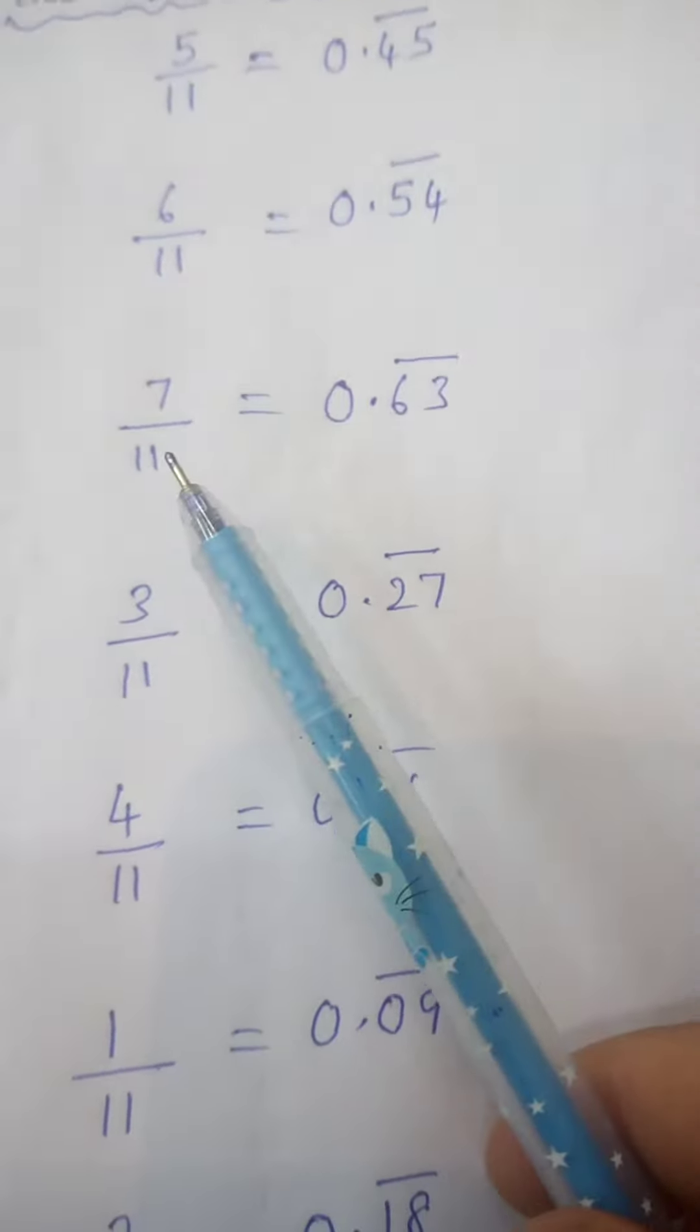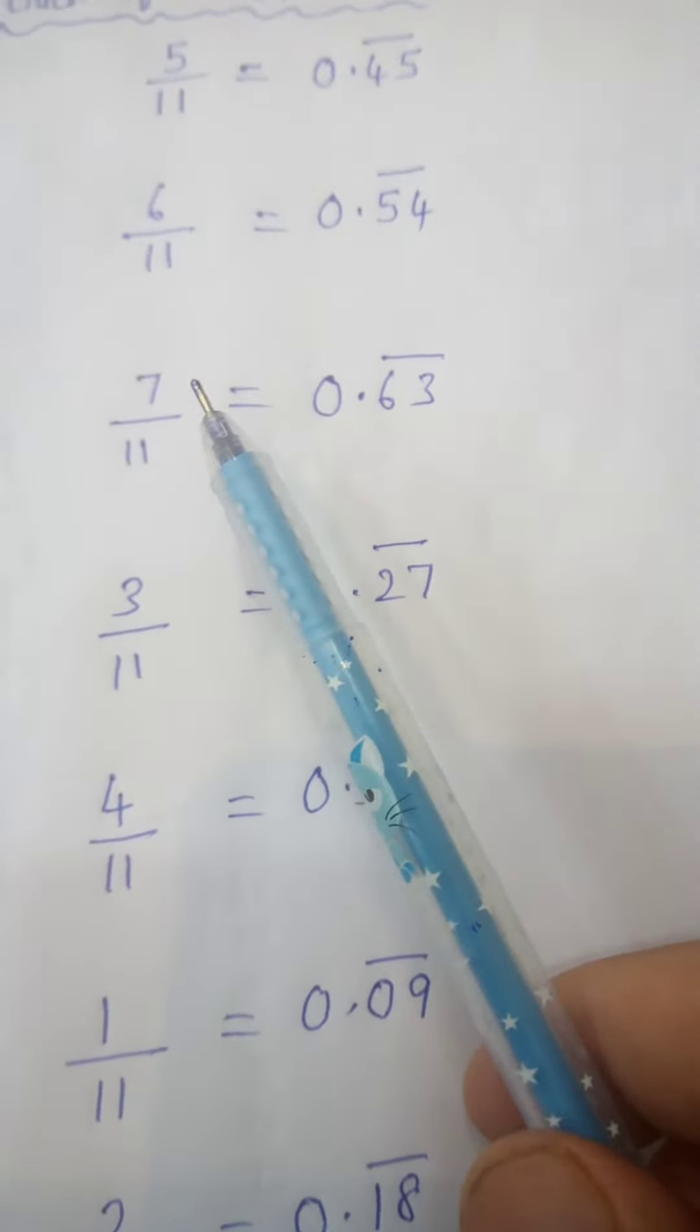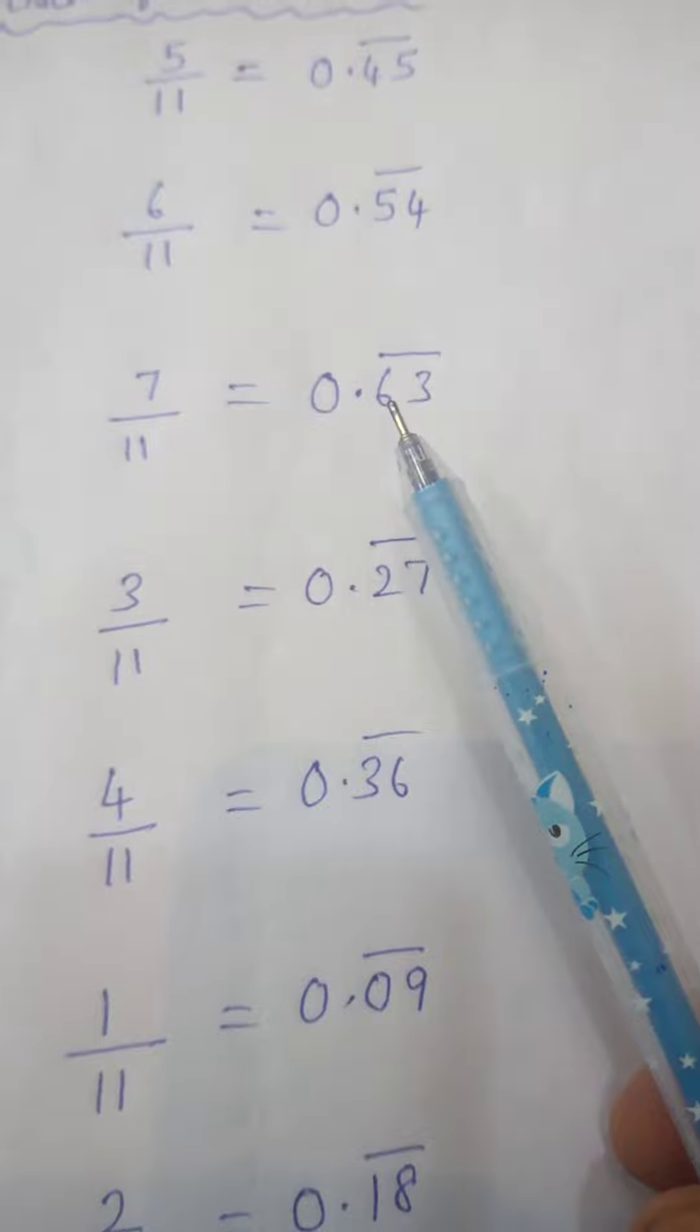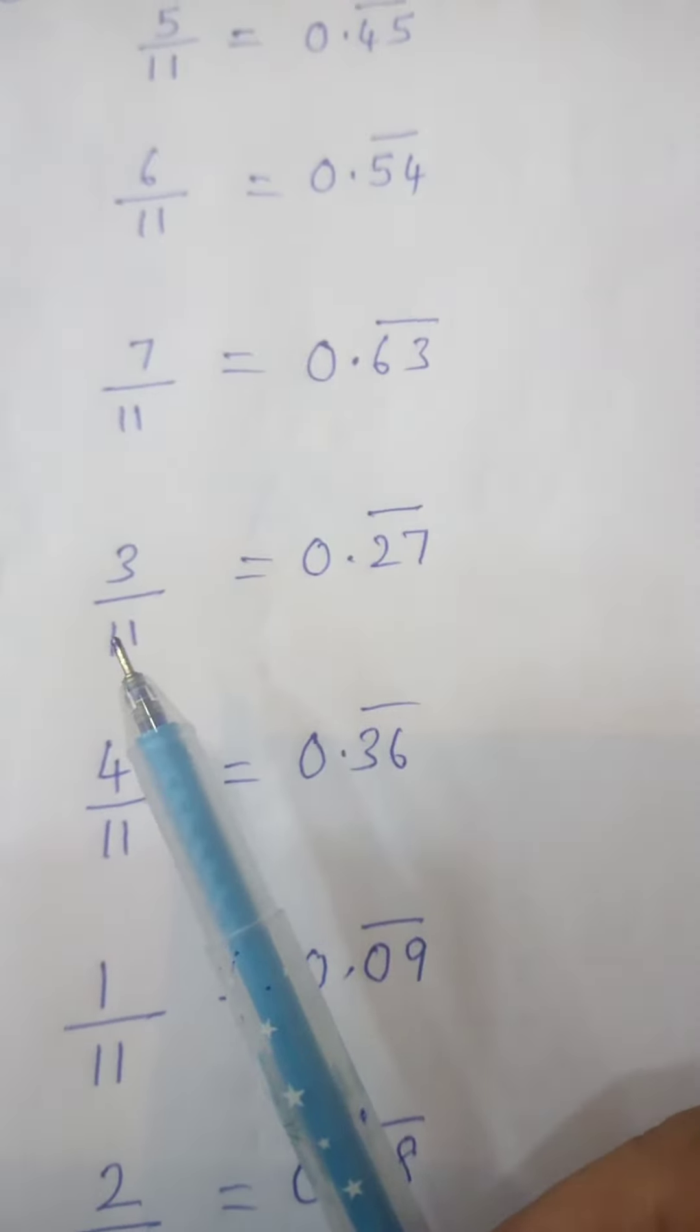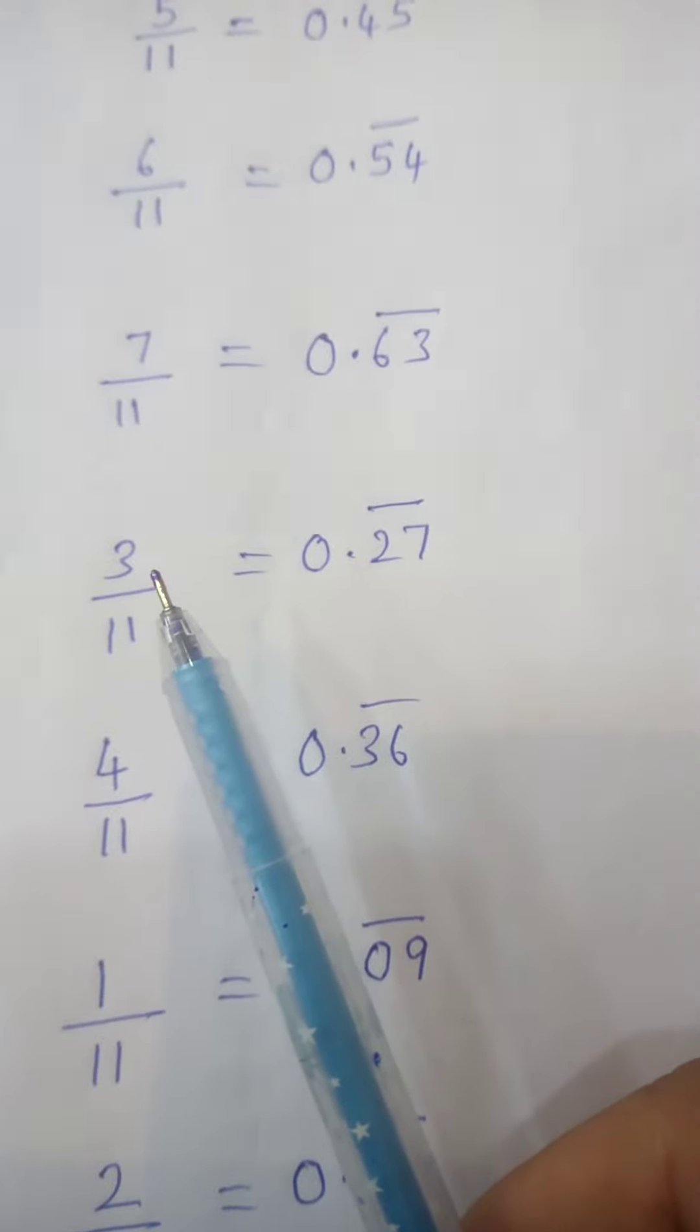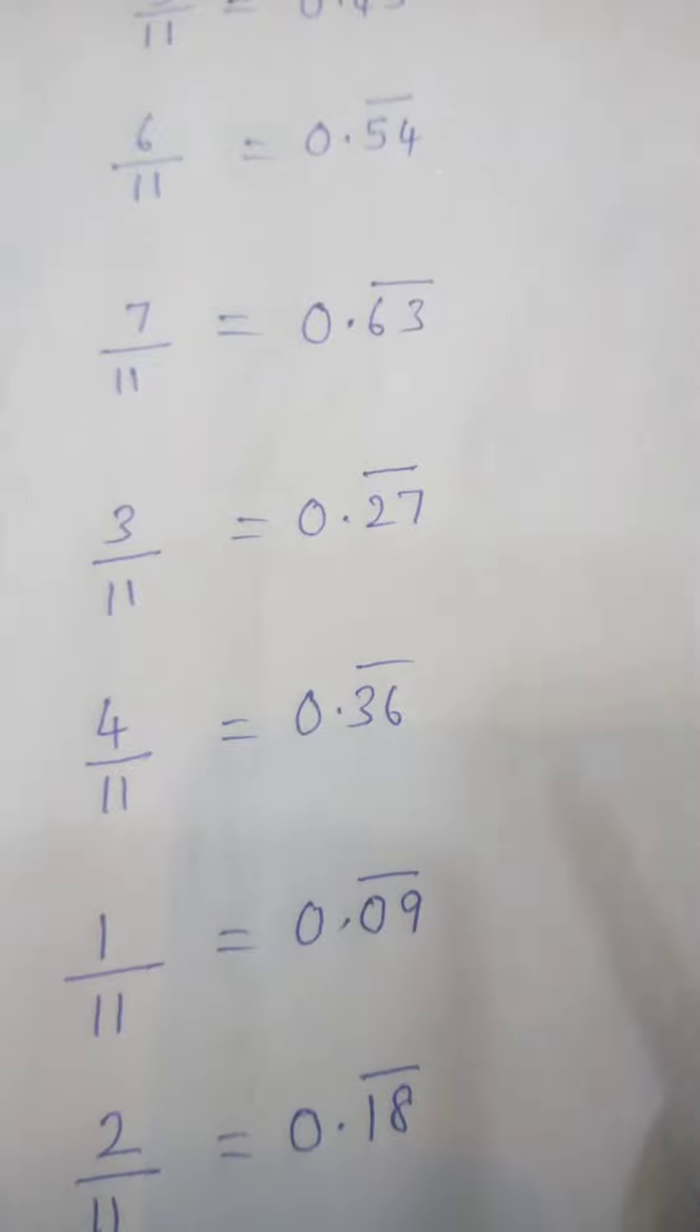Now, 7 divided by 11. Multiply 7 with 9. 9 times 7 is 63, so 0.63 bar. Next, 3 divided by 11. 3 multiplied by 9 is 27, so it is 0.27 bar.